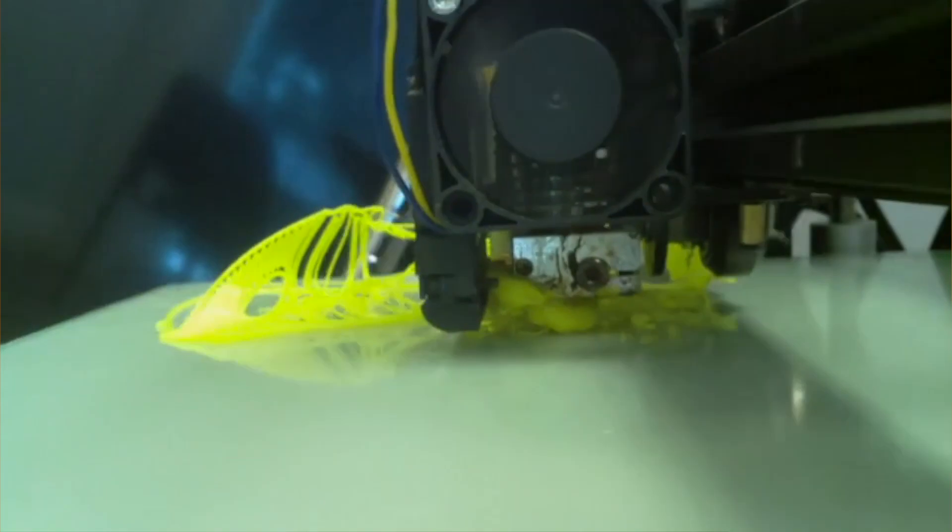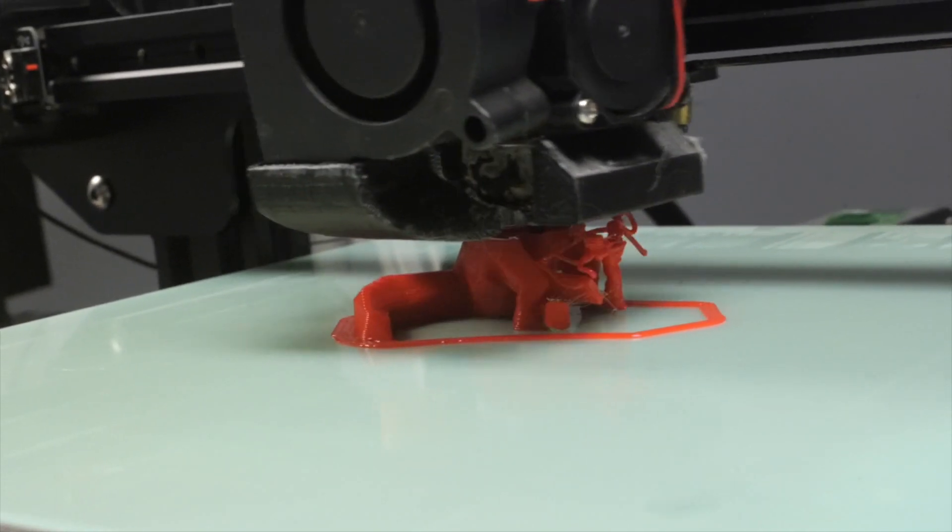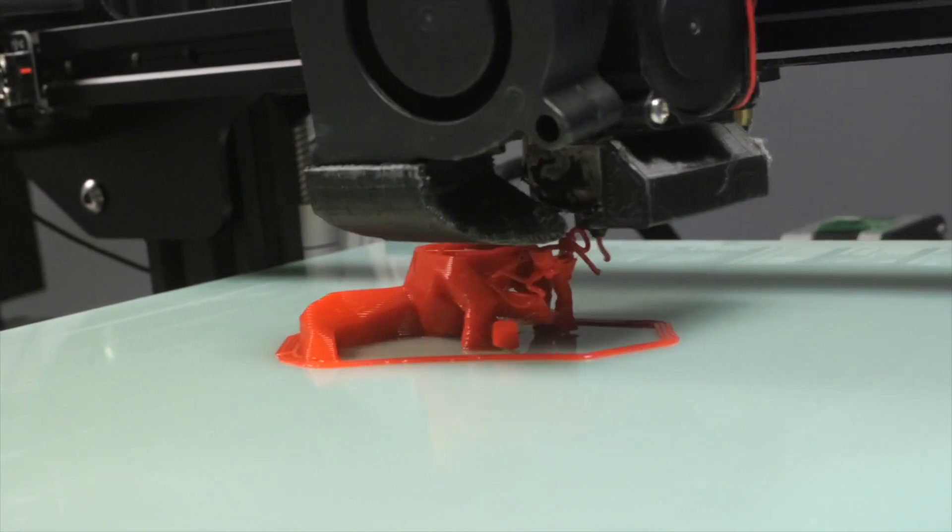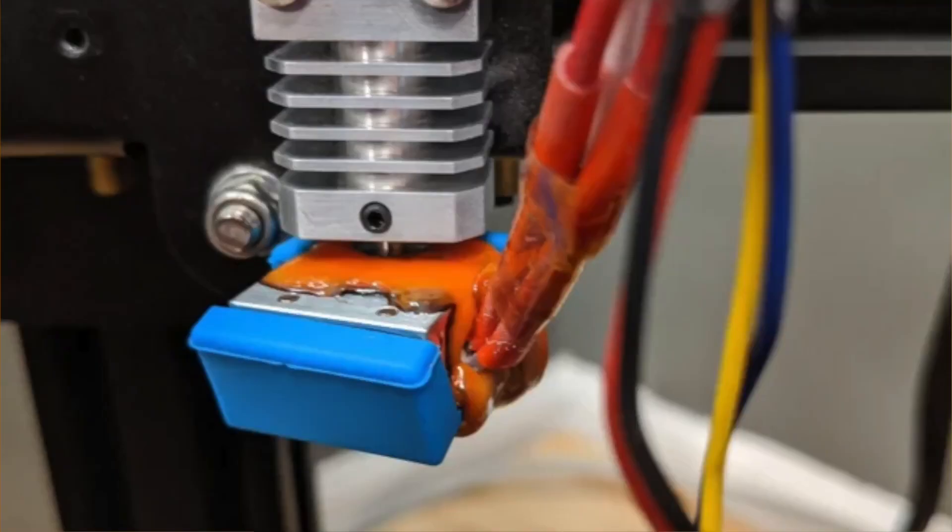The second thing that can cause a nozzle blob is when the part detaches partway through the print. If you're printing something that's tall and thin, that can cause a nozzle blob if it gets knocked over after the first few layers. And in rare cases, plastic can actually leak out from around the nozzle, rather than out of the middle of the nozzle, and this is usually because hardware's loosened over time or hasn't been installed correctly.